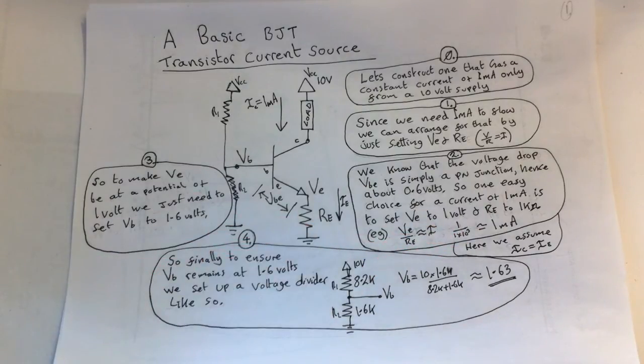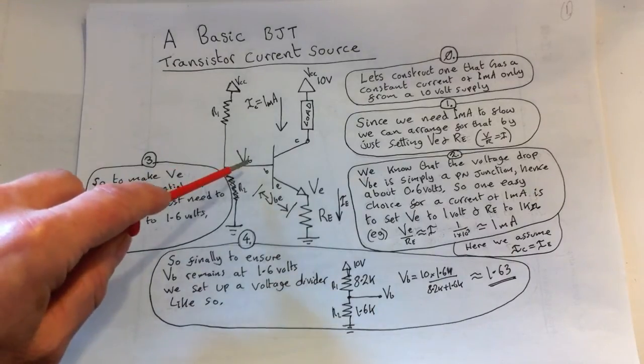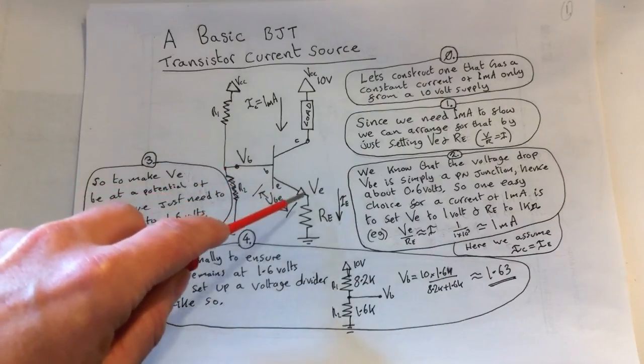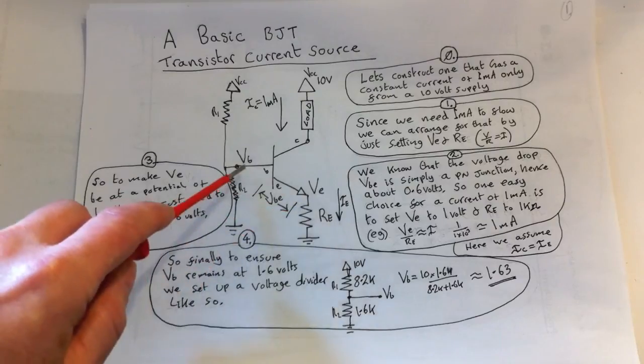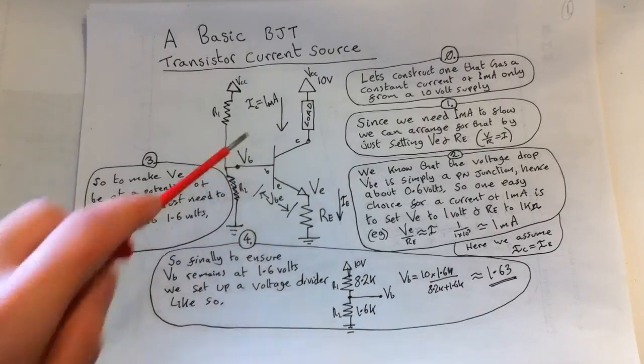So all we have to do basically is get this base voltage to 1.6 volts, because it drops 0.6 volts, so 0.6 off 1.6 is the one volt that we need here. So we need to be able to fix the voltage at the base of the transistor at 1.6 volts.